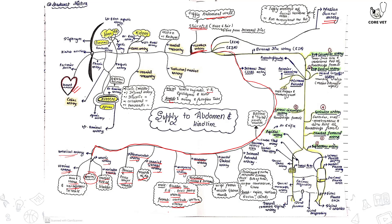The caudal gluteal artery supplies the biceps femoris and the middle gluteus muscle. The internal pudendal artery in males supplies the bulb of the penis, corpus cavernosum, and glans. In females it supplies the vagina, vestibule, vulva, and clitoris. It also supplies some muscles of the perineum, the rectum, and the obturator externus.